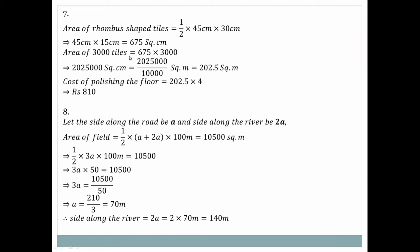The number of tiles needed: 675 × number of tiles = total floor area. Calculating: 2025 × 1000 = 2,025,000. The result is found by dividing the total area by the tile area.